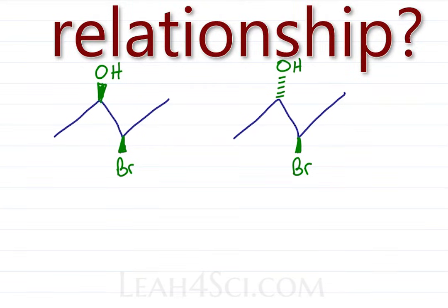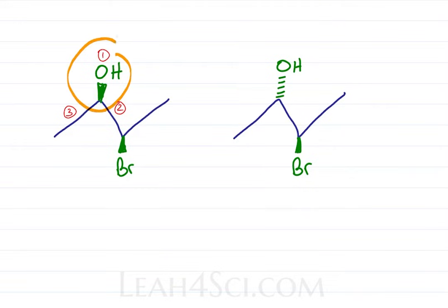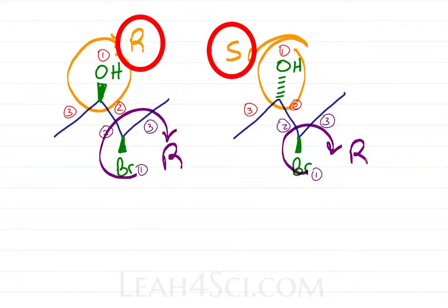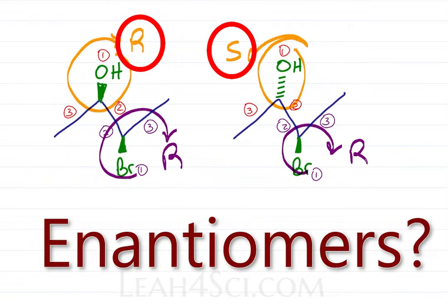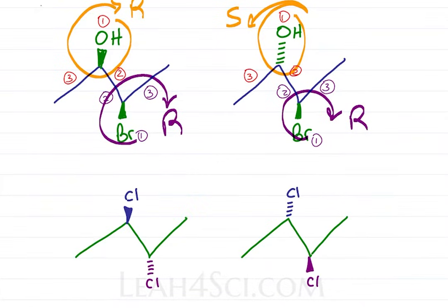What's the relationship here? Are they the same? Enantiomers? Quickly finding R and S. We see the alcohol is R and S or opposites. Enantiomers? The bromine is R and R. Same thing.